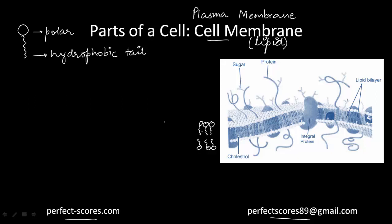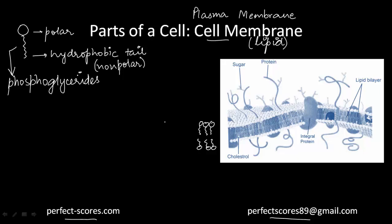This arrangement ensures that the non-polar tail of the saturated hydrocarbons is not harmed by the aqueous environment of the cell. The saturated hydrocarbons have a non-polar, hydrophobic tail — meaning it does not like water — and it needs to be protected from the watery substances present outside and within the cell. That is why the tail always faces inward. The lipid component of the membrane is mainly composed of phosphoglycerides.